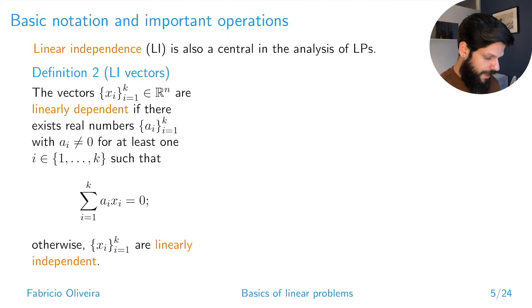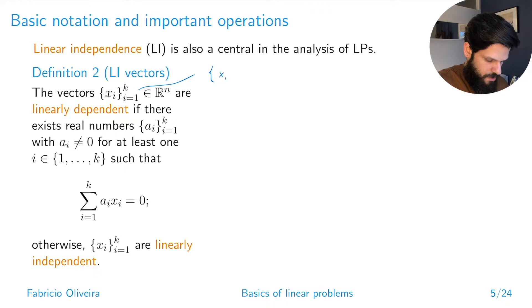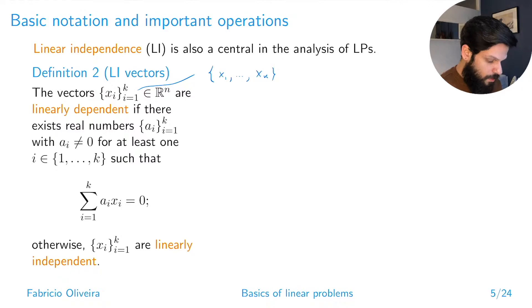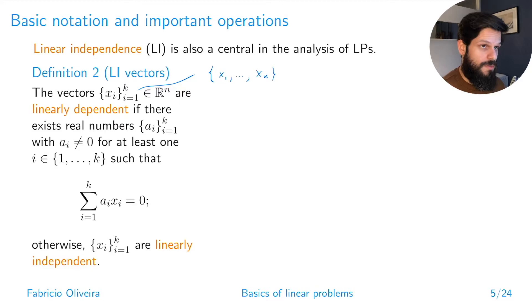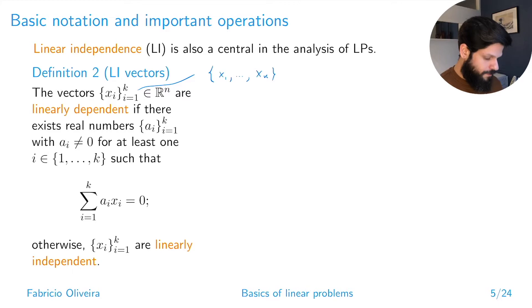We have a collection of vectors x_1 through x_k. They are said to be linearly dependent if you can find real numbers — one for each vector — such that when you multiply each vector by its coefficient and add them all up, they cancel out, without making all the coefficients zero. That trivial case doesn't count. If you can't find such coefficients, they are linearly independent.